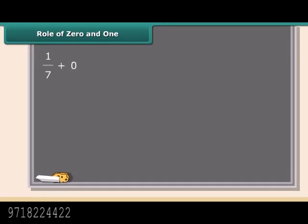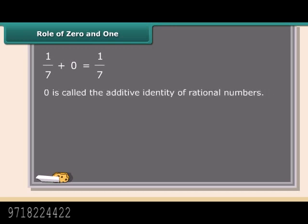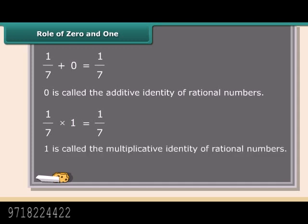Here we have added zero to a rational number. What did you notice? When we add zero to a rational number, the sum is always again that rational number. For this reason, zero is called the additive identity of rational numbers. Now check out the multiplication of a rational number with 1. When we multiply a rational number with 1, the product is always again that rational number. For this reason, 1 is called the multiplicative identity of rational numbers.